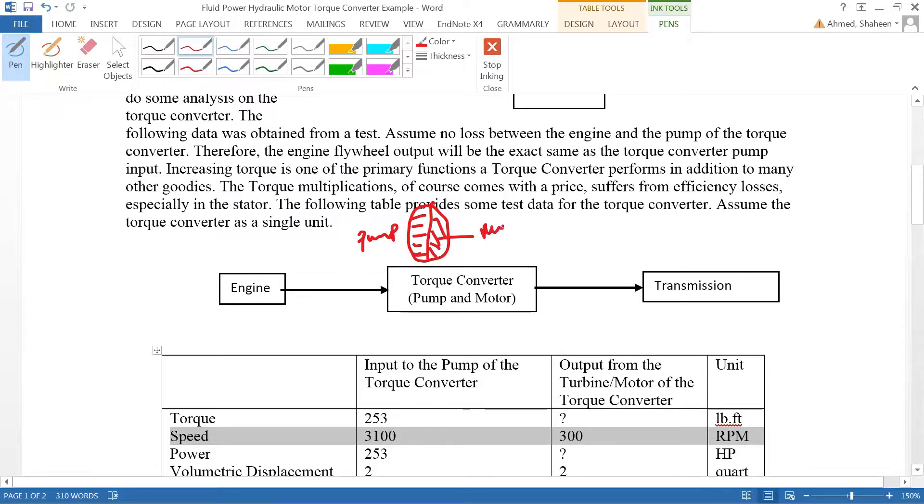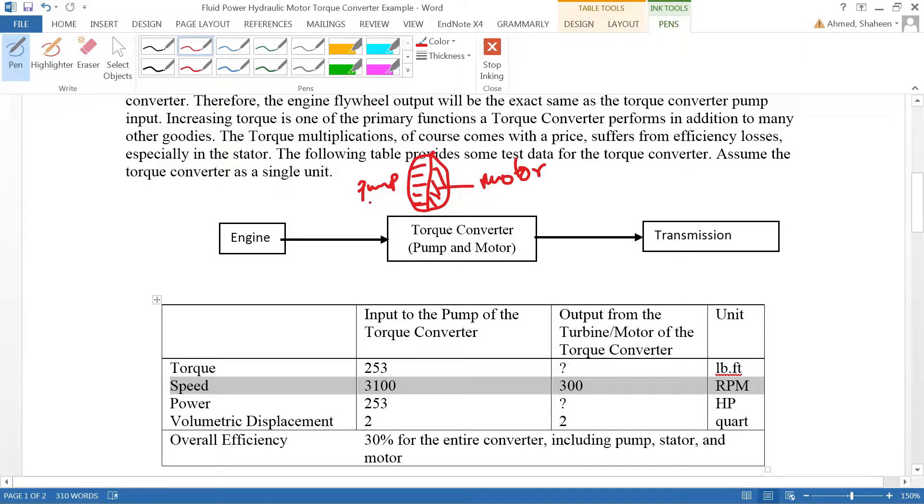You have all the information given here. On the pump it gives 253 pound-feet of torque and the engine power available is 253. However, you should always calculate that based on the torque and the speed what the power is taken by any hydraulic system.